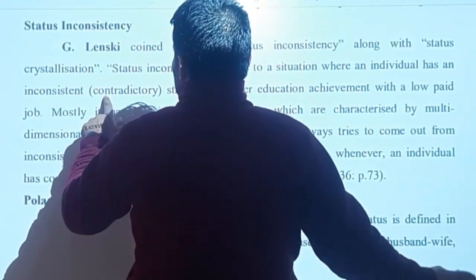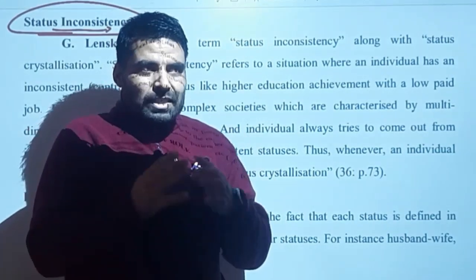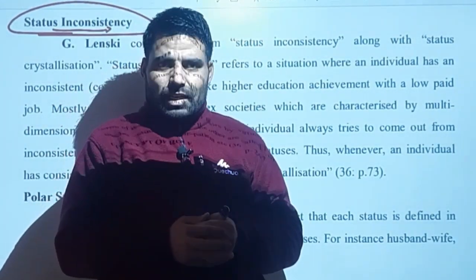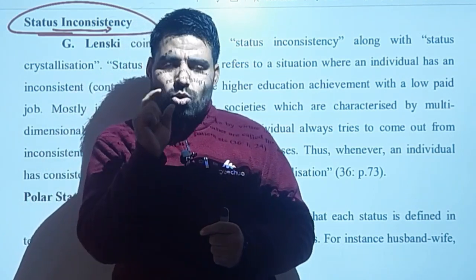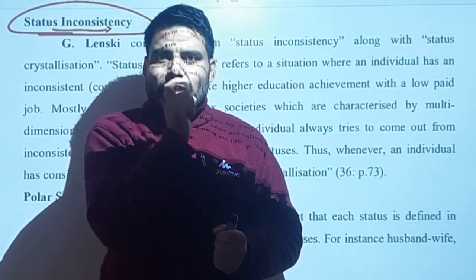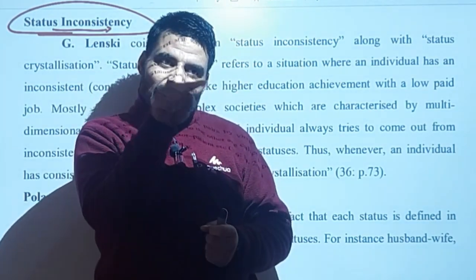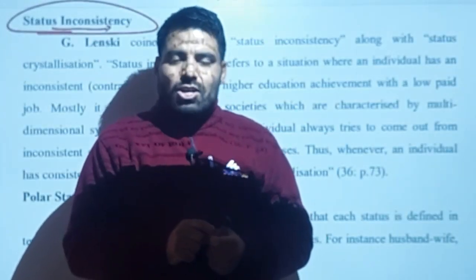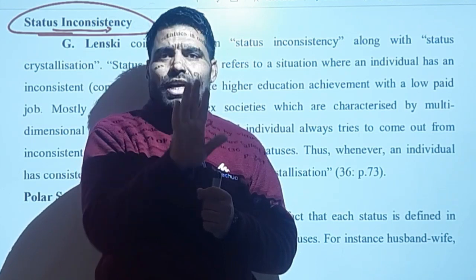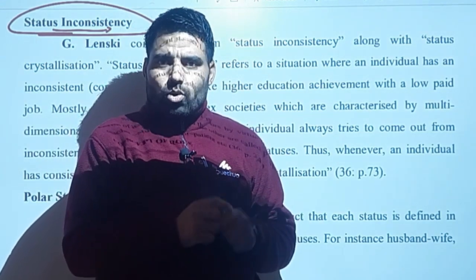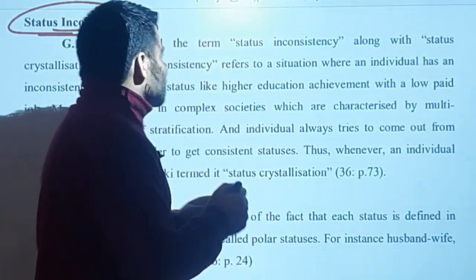After that we have status inconsistency. What does status inconsistency mean? A person acquires good education in life, receives a good education, but despite that they are not getting the job in which they would be satisfied. They get a job in which they are not satisfied. If this happens to a person, they keep working in that position but are always looking to leave it, thinking that when I get a better job I will quit this one. The status or position a person holds at that time but is not satisfied with — this we call status inconsistency.